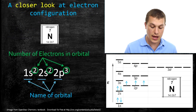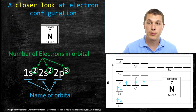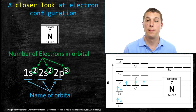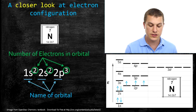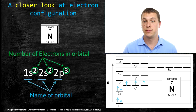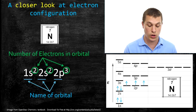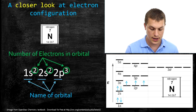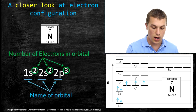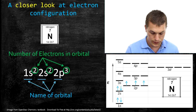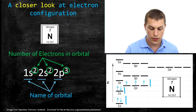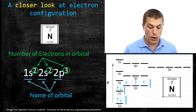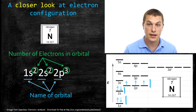Remember that those superscripted numbers after the orbital name — like 1s, 2s, and 2p — tell you the number of electrons in each orbital, whereas the orbital name itself tells you which orbital it is. 1s means the lowest energy, smallest s orbital. 2s means the second lowest energy s orbital, the second biggest s orbital. We have two electrons in our 1s, two electrons in our 2s, and three electrons in our 2p — that's why we write 1s², 2s², 2p³.